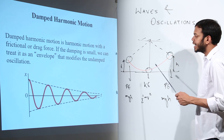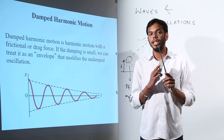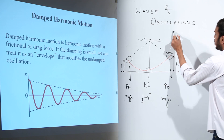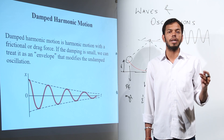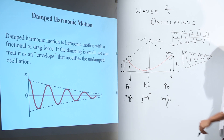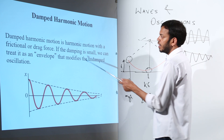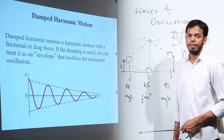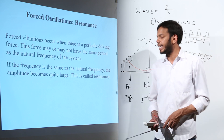Now, what are damped oscillations? If there is no loss of energy in the setup — like the block connected to the spring with the marker drawing the pattern — the oscillation energy would remain constant throughout the motion. But this never actually happens. There is always friction and energy loss, which is why the oscillations decrease in amplitude. These decreasing-amplitude oscillations are called damped oscillations. If the damping is small, we can treat it as an envelope that modifies the undamped oscillation.